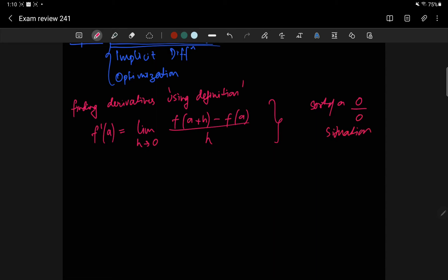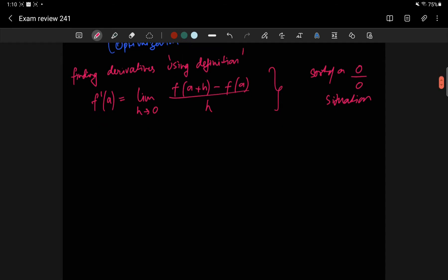Because as h becomes smaller, whatever your function is, even if it's increasing really fast, as h gets closer to 0, f of a plus h is just f of a. So you're doing a very small number divided by another small number. So it's not sure what's going to happen each time.